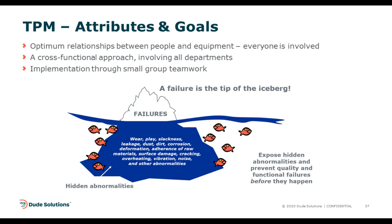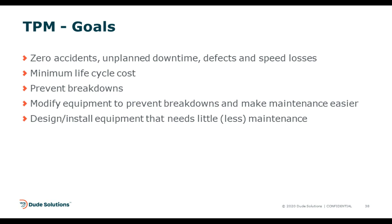TPM is an optimal relationship between people and equipment. Everybody is involved — operators, production-oriented people, maintenance — in a cross-functional approach involving all departments, implemented through small group teamwork. Think of failure as the tip of the iceberg: when assets fail, maybe it was a clogged filter causing overheating, but the real source could be wear, play, slackness, leakage, vibration, noise — tons of abnormalities that can affect that asset, many of them hidden. You've got to expose and catch them early. The published goals of TPM are: zero accidents, zero downtime, zero defects, and zero speed losses.